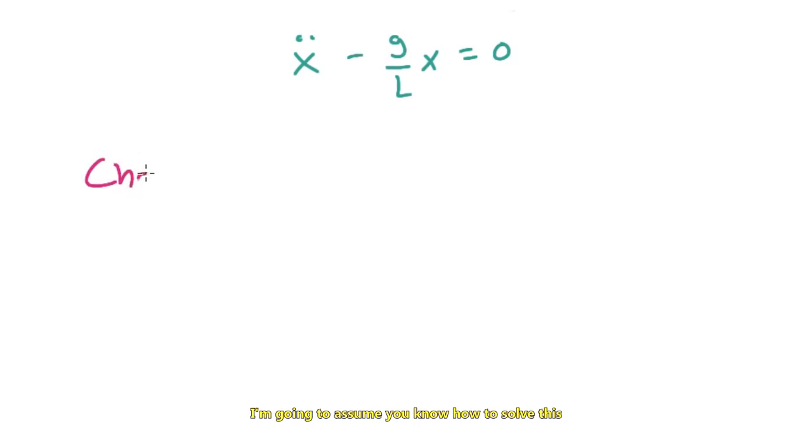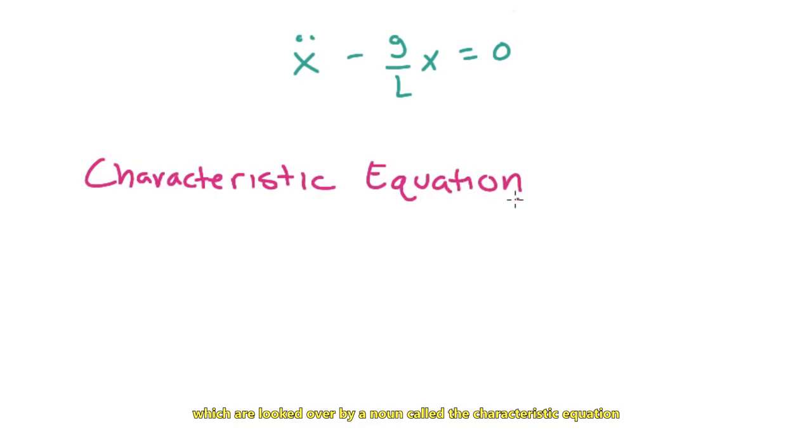I'm going to assume you know how to solve this. There are some profound realizations when solving this equation dealing with eigenvalues, eigenvectors, and linear transformations, which are looked over by a noun called the characteristic equation.